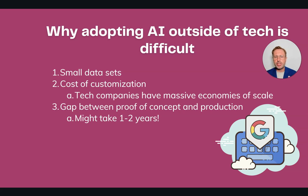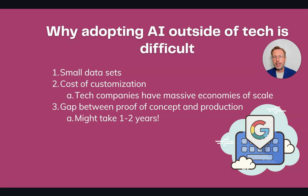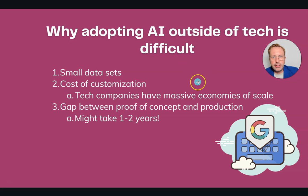There's also a gap between the proof of concept and actual production, which can take one to two years. It may be easy to come up with a prototype of how AI could be applied, but getting it to work in the real world is much more difficult. In the tech world you can roll things out in a sprint, but if you're dealing with complex supply chains, manufacturing, or complex infrastructure, that could take months.